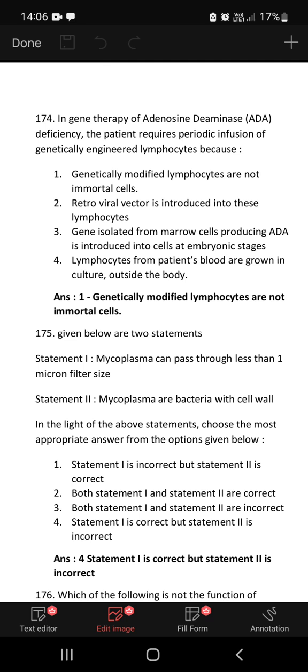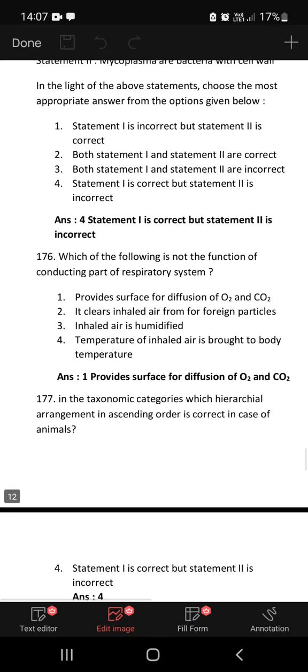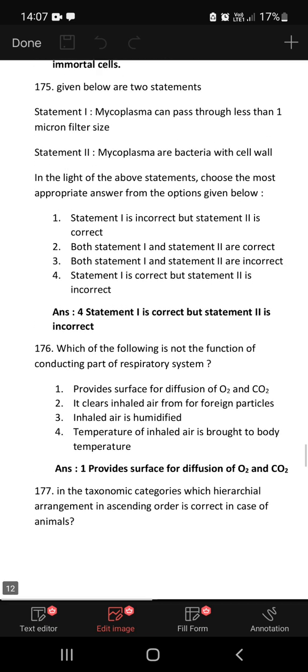In gene therapy of adenosine deaminase deficiency, the patient requires periodic infusion of genetically engineered lymphocytes because genetically modified lymphocytes are not immortal cells. Statement 1: Mycoplasma can pass through less than one micron filter size. Statement 2: Mycoplasma are bacteria with cell wall. Statement 1 is correct but statement 2 is incorrect. Which of the following is not the function of conducting part of respiratory system? Provide surface for diffusion of oxygen and carbon dioxide. That is in alveolar, so that is not a part of conducting part of respiration.